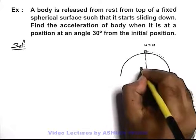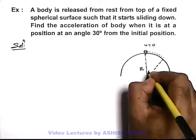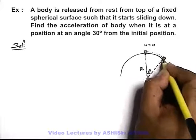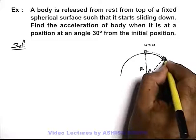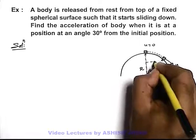Say the radius of this surface is r. And when the body travels up to a position where the radius makes an angle theta with the vertical or initial position, we can say the body will have speed v. And in this situation,